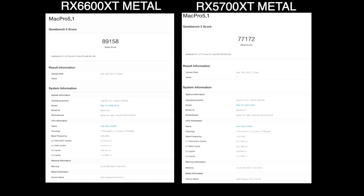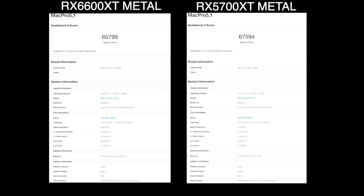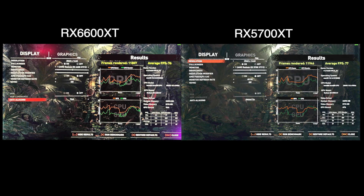Here are a couple of benchmarks compared to my RX 5700 XT. The 6600 XT uses less power, and it takes the win in the Geekbench Metal score. It gets a slightly lower score in OpenCL, where the RX 5700 XT beats it — but not by much. Geekbench scores vary each run anyway. In Tomb Raider, the RX 5700 XT squeaks out a win by one frame and a few more frames rendered. These are all running Metal in macOS, not Windows.